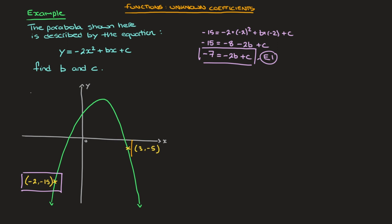Now I turn to the second point we're given, which has coordinates 3 and negative 5. Just as I did for the first point, I go back to the equation and replace every x by 3 and y by negative 5. So that gives us: negative 5 equals negative 2 times 3 squared plus b times 3 plus c. That's negative 2 times 9, which is negative 18, plus b times 3, which is 3b plus c.